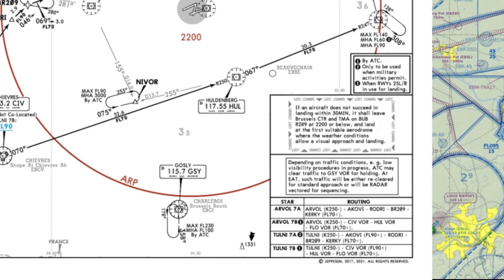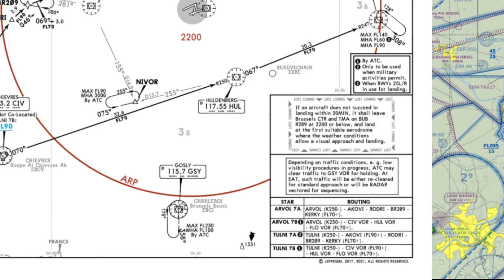Moving on to the lower right corner, we have a summary of the different routes with all of the waypoints, altitude and speed restrictions. As you can see, there are a couple of numbers written next to the names as well. This is often done when there's too little room to put all of the information, so it's basically a reference to another section of the same chart where you can find the rest of the info.